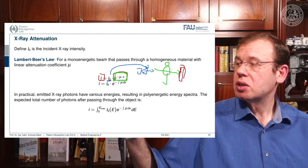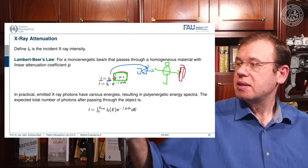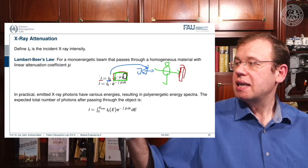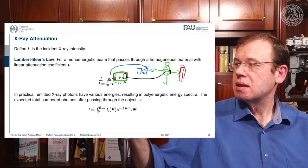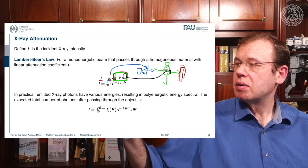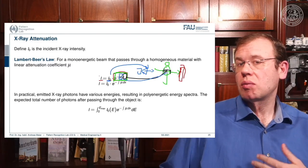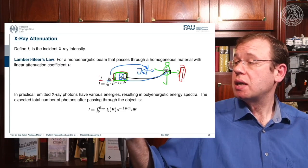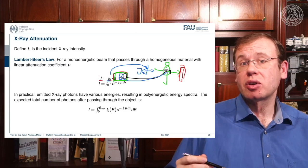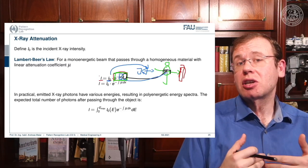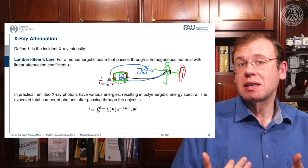We can write this as a formula with an exponential function: e to the power of minus mu times x. Here x is the length of the intersection of the ray through the body. Mu is a characteristic constant for the material — if the patient consists completely of water, mu is constant. This material constant mu times path length x gives a coefficient, and e to the minus that coefficient gives essentially the probability of the x-rays being absorbed, resulting in a reduction of the original intensity detected.